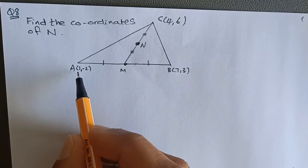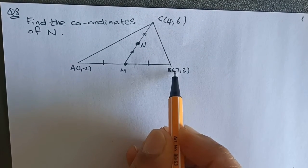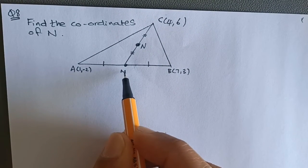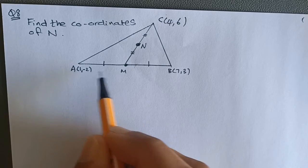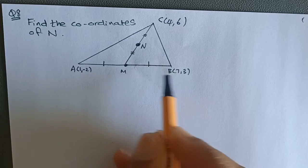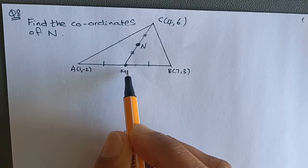We use the midpoint formula by adding the two x values and dividing it by 2 to get the x value of the midpoint. We then add the y values, divide it by 2, and get the midpoint y value.